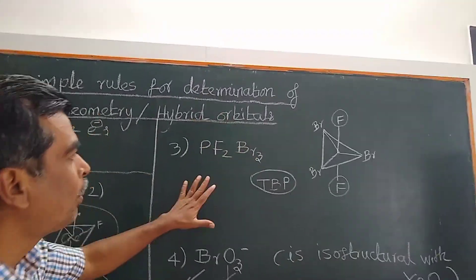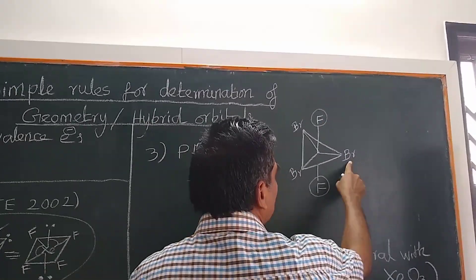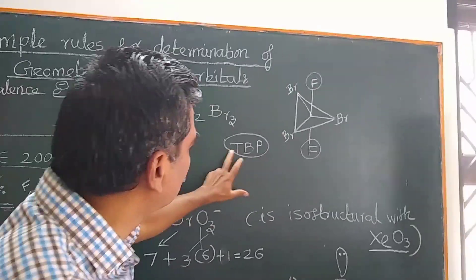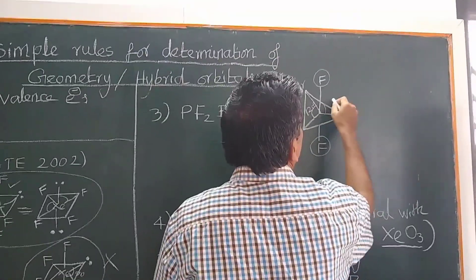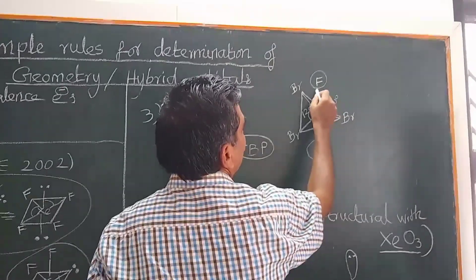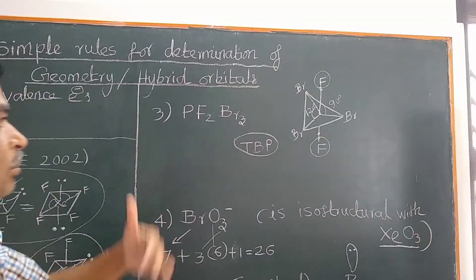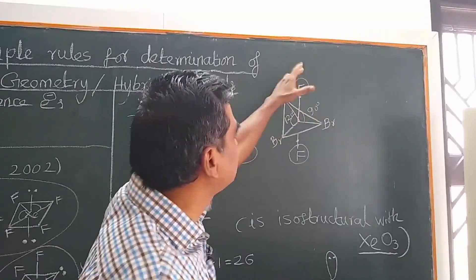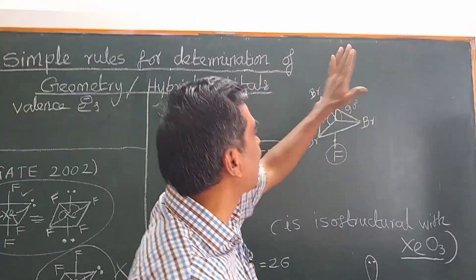For BrF3 (trigonal bipyramidal geometry), fluorine is more electronegative, so the bond pair is attracted towards the fluorine atoms. Bond pair–bond pair repulsion is less when fluorine occupies the axial position, since the axial–equatorial angle is 90° but axial–axial is 180°. Therefore, electronegative atoms preferentially occupy the axial position in a trigonal bipyramid — this is a common rule.